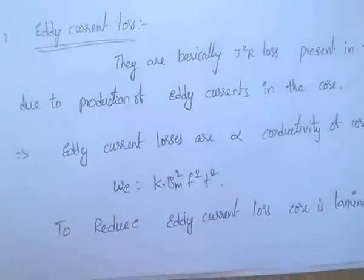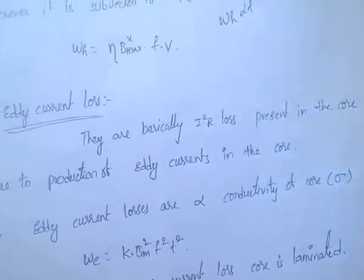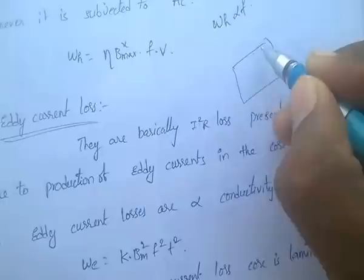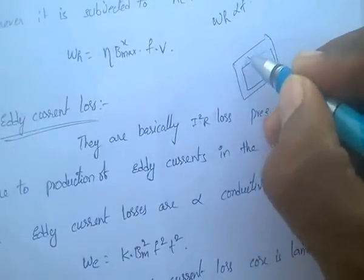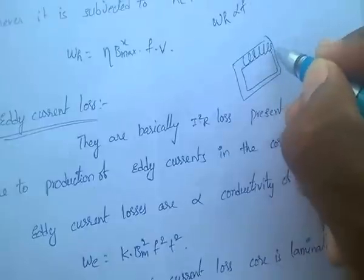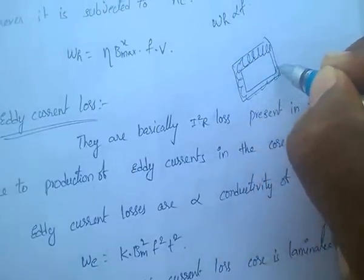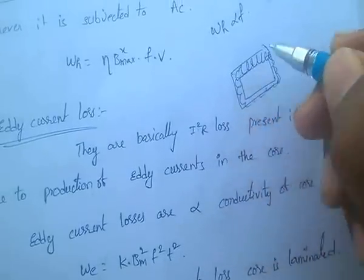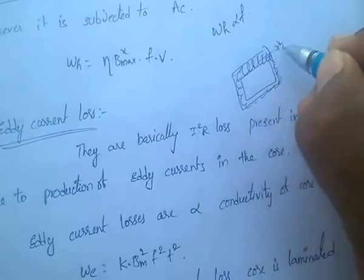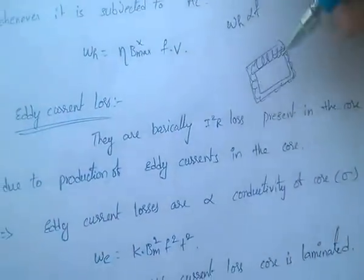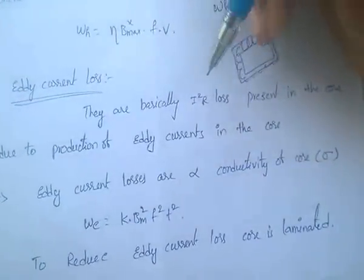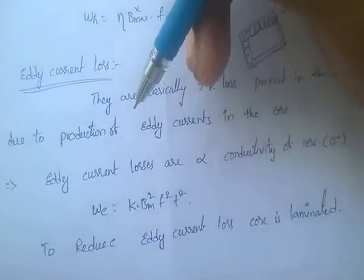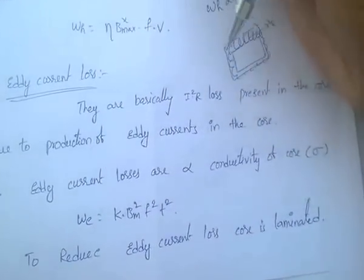Eddy current losses are losses due to eddy currents — circulating currents in the core. These currents circulate within the core, causing I²R losses. These are called eddy current losses, and they are present in the core due to the production of eddy currents.